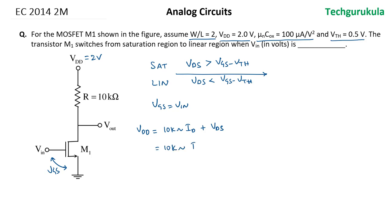Let's write 10 kilo ohms times ID plus VDS is equal to VGS minus VTH. VDD is 2 volts. We need to find what is ID. ID is equal to μₙCₒₓ, which is 100 microampere per volt squared, times W/L, which is 2, times (VGS minus VTH) whole squared divided by 2. The 2's cancel. Now ID is equal to 100 microampere per volt squared times (VGS minus VTH) whole squared.